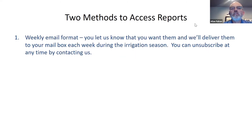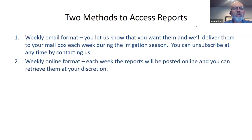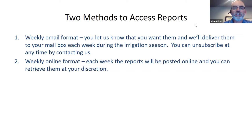We offer access to these weekly ET reports using two methods. First, there is the weekly email format — you let us know that you want them and we'll deliver them to your mailbox each week during the irrigation season. You can unsubscribe at any time by contacting us. The alternative is going to our weekly online format. Each week we post these reports online to various websites. You can retrieve them at your discretion, but it does fall on you to make the time and give priority to go get this information.